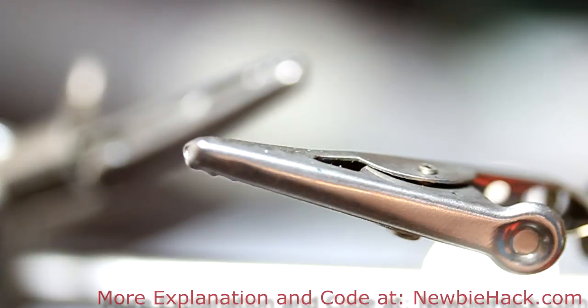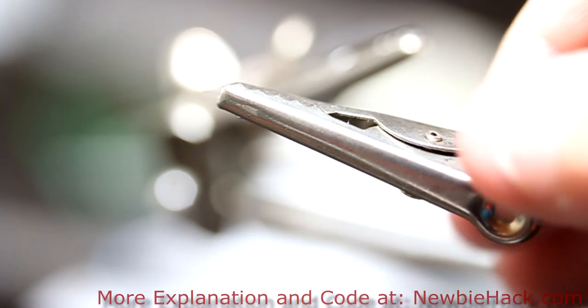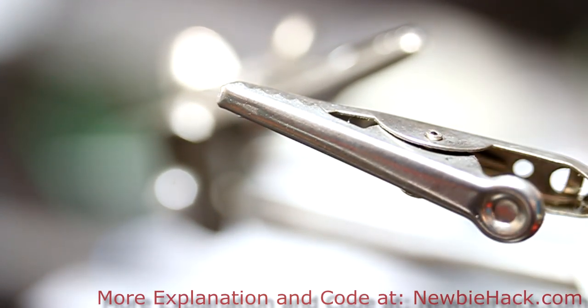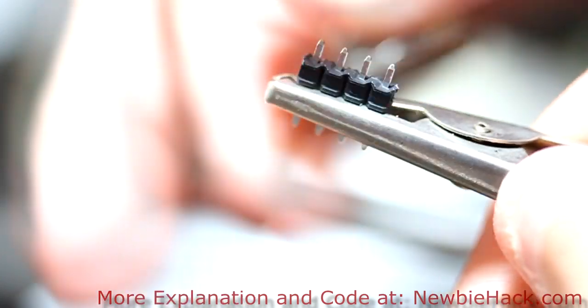For this operation it might be best to use extra hands. Extra hands is generally just a device that has two alligator clips on it and you can use it to hold your pieces while you're soldering. I'm going to put the header into one of the alligator clips and I'm putting it all the way down so it doesn't wiggle.